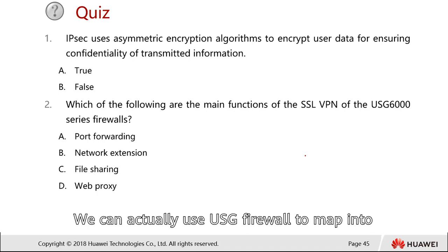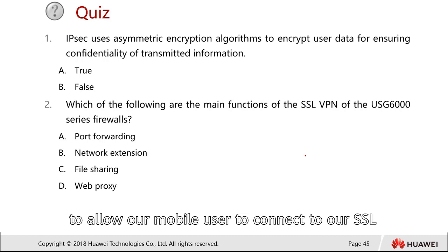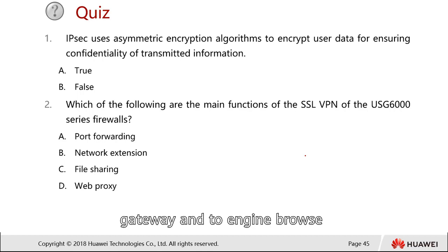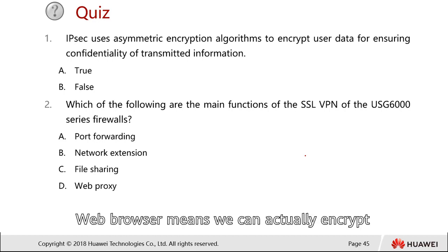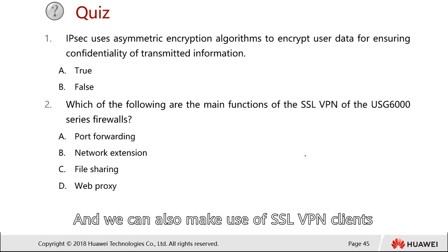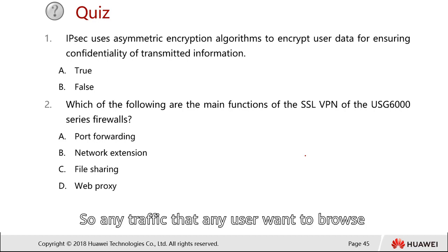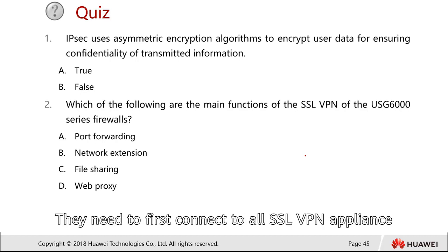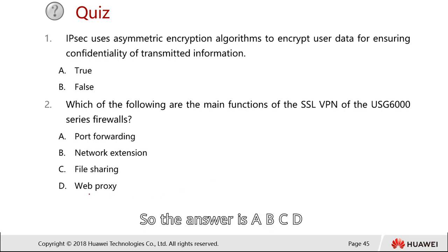Continuing question two: for file sharing, the USG firewall maps to a CIFS shared folder, allowing mobile users to connect to the SSL gateway and browse the CIFS file server over HTTPS. The final function is web proxy — the SSL VPN can encrypt traffic to an intranet web server that only runs HTTP, acting as a middleman proxy. Any user browsing the intranet must first connect to the SSL VPN appliance (the firewall itself), which then encrypts all HTTPS traffic. So the answer is A, B, C, and D.